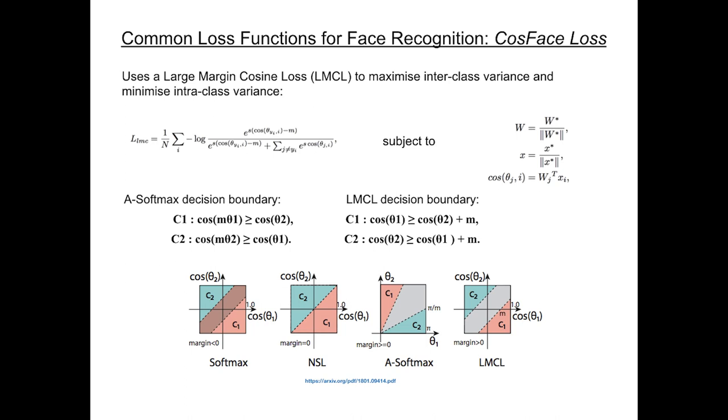It does this by defining the decision margin in cosine space, unlike SphereFace's A-Softmax loss, which defines it in angular space. It starts by reformulating the Softmax loss by L2 normalizing the features and weights to remove radial variance. This addresses A-Softmax's first issue of producing different margins for different classes, which is the result of depending on the value of theta.